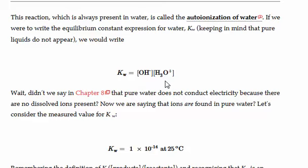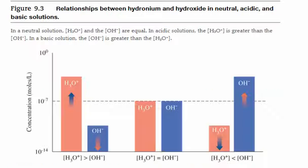And in pure water, they are equal to one another. So pure water would be considered to be neutral, where the concentration of hydronium is equal to the concentration of hydroxide. And the concentration of each is incredibly tiny at 1 times 10 to the minus 7.